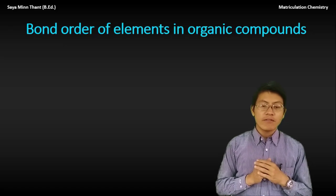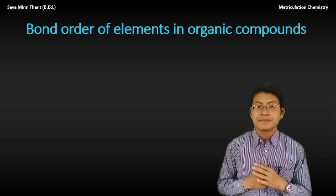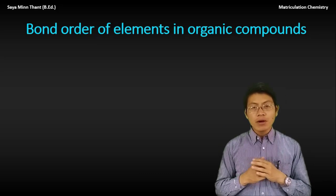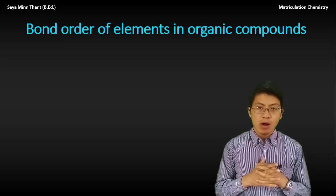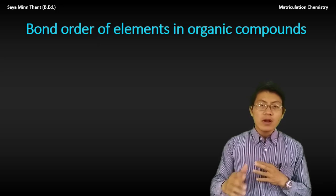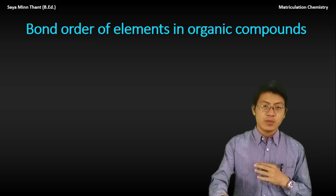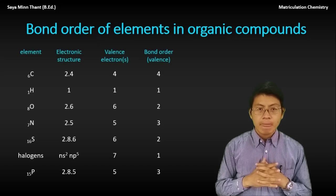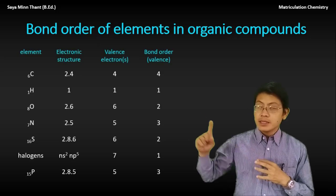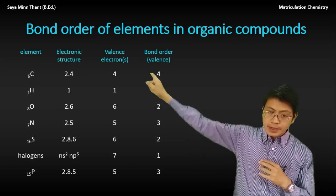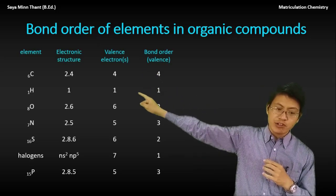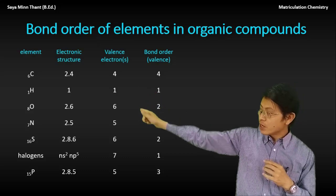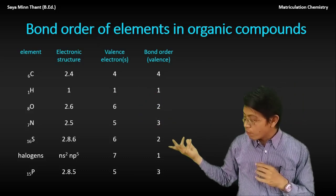Bond order of elements in organic compounds — the bond order is very important. Now let's talk about carbon, hydrogen, oxygen, nitrogen, sulfur, halogens, and phosphorus.